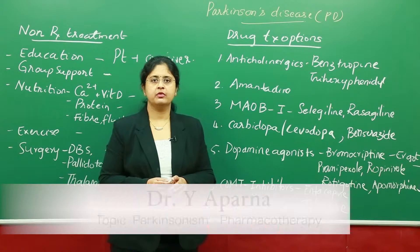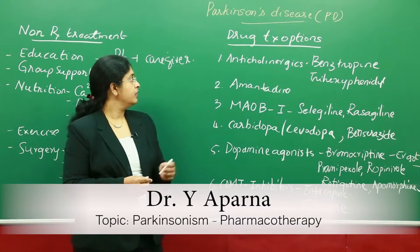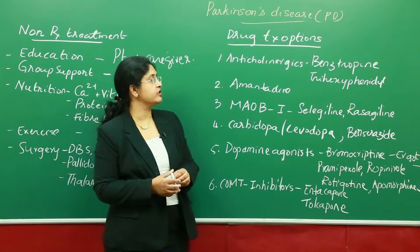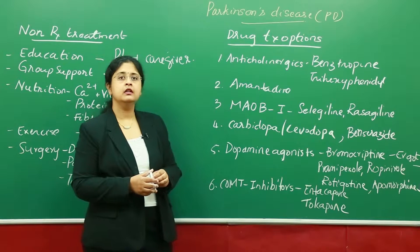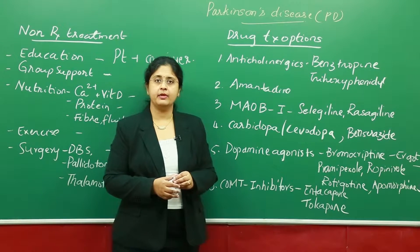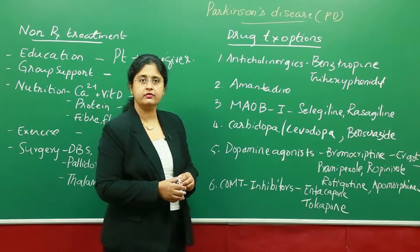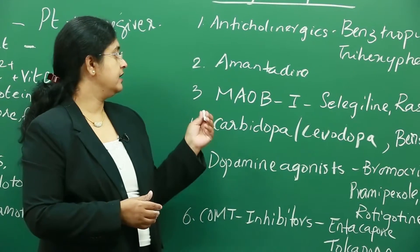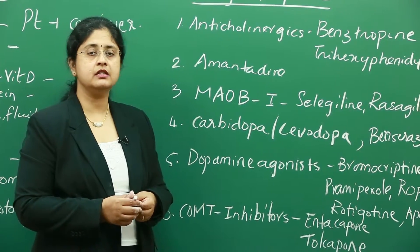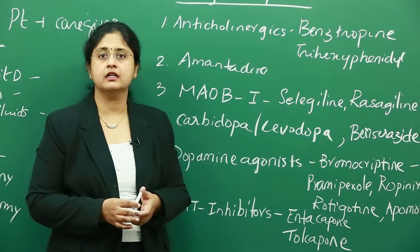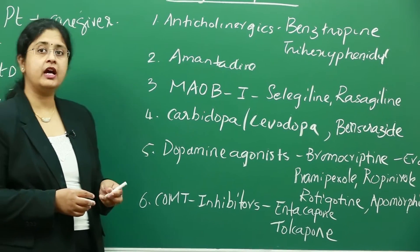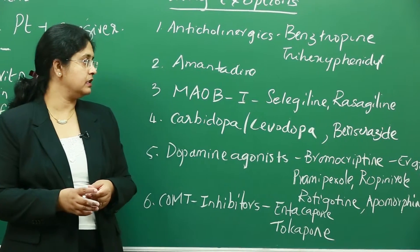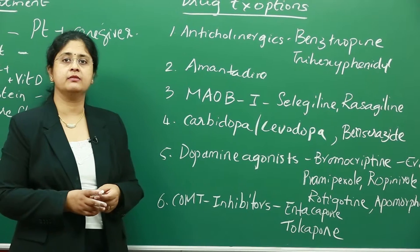Let us look at the different agents used in Parkinson's disease. The first class is anticholinergics, with examples like benztropine and trihexyphenidyl. The second commonly used agent is amantadine, which is also a well-known antiviral agent. Third, we have monoamine oxidase B inhibitors — examples are selegiline and rasagiline. Fourth is carbidopa-levodopa, which is the gold standard for the treatment of Parkinson's, and we also have benserazide.